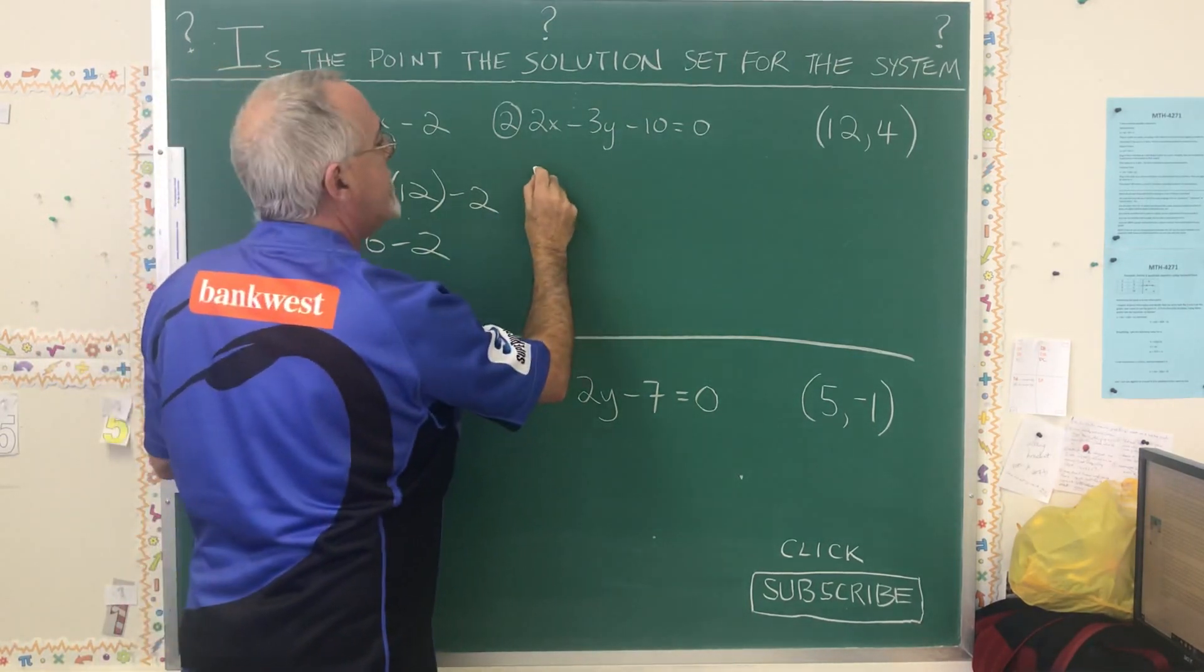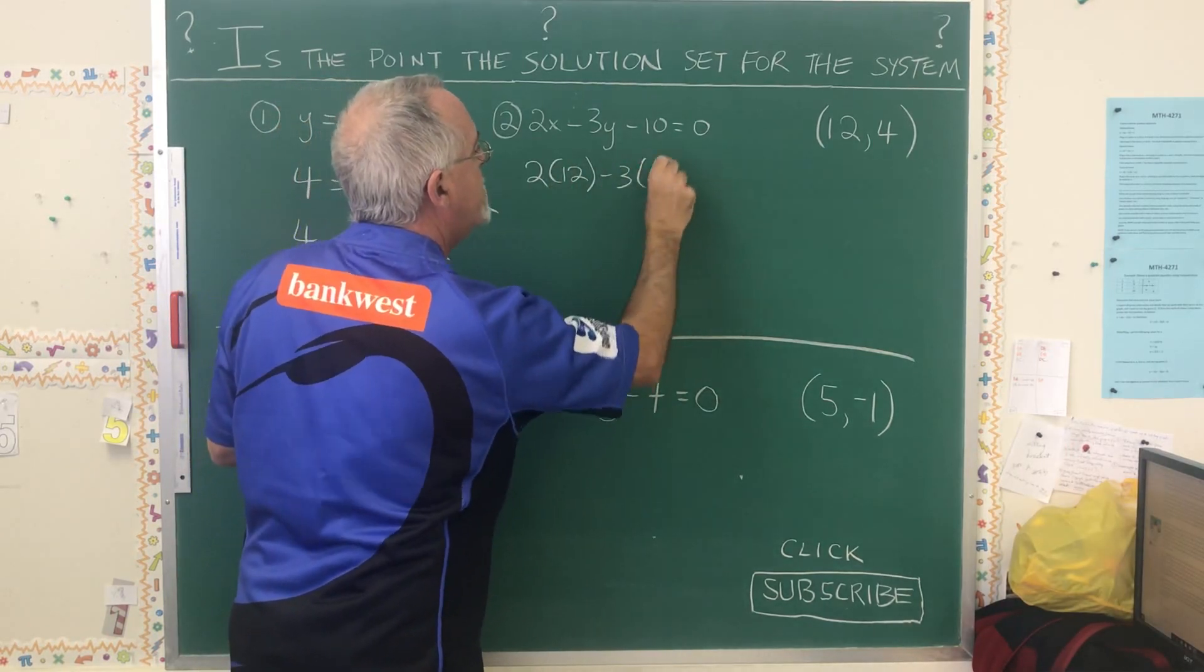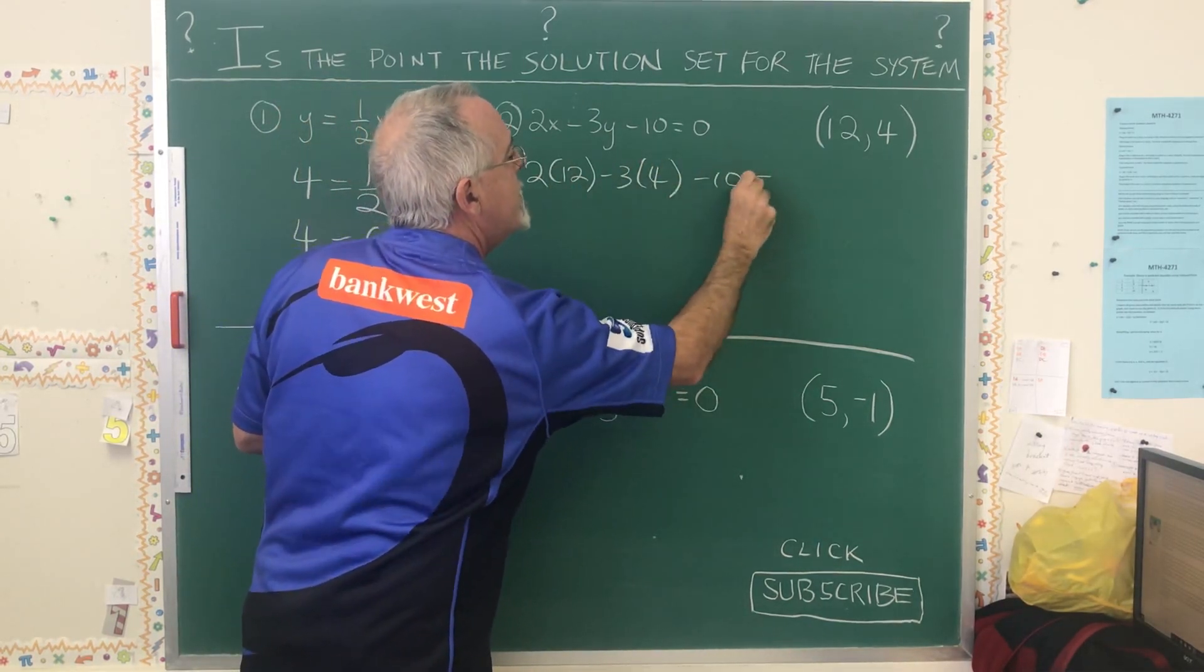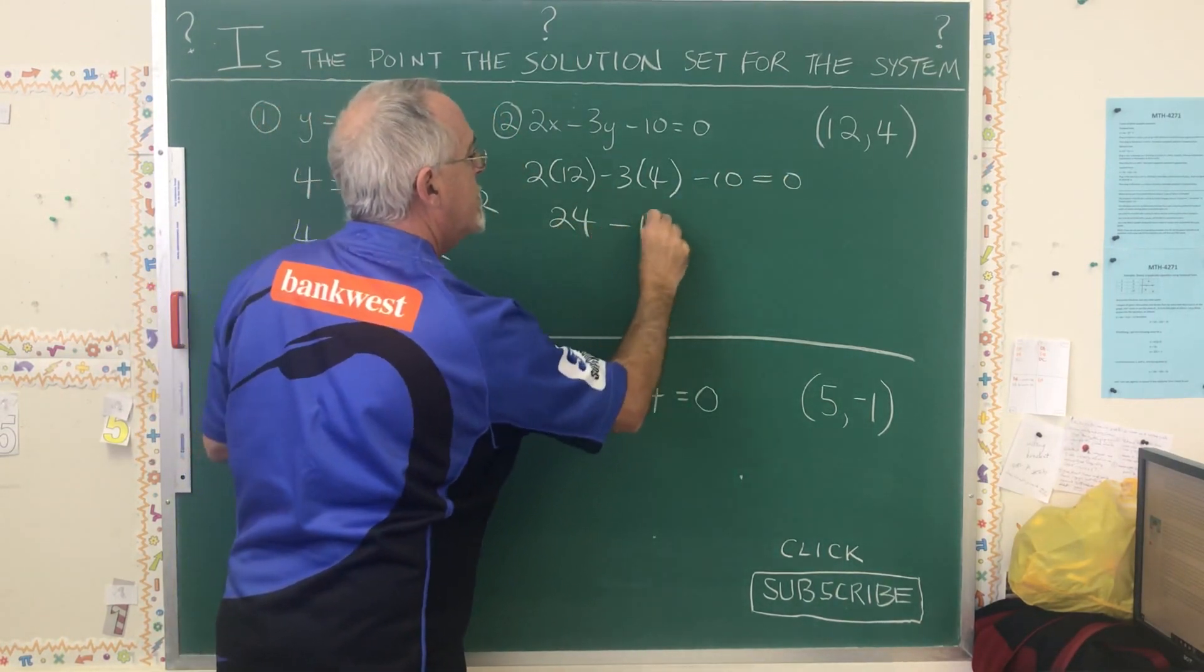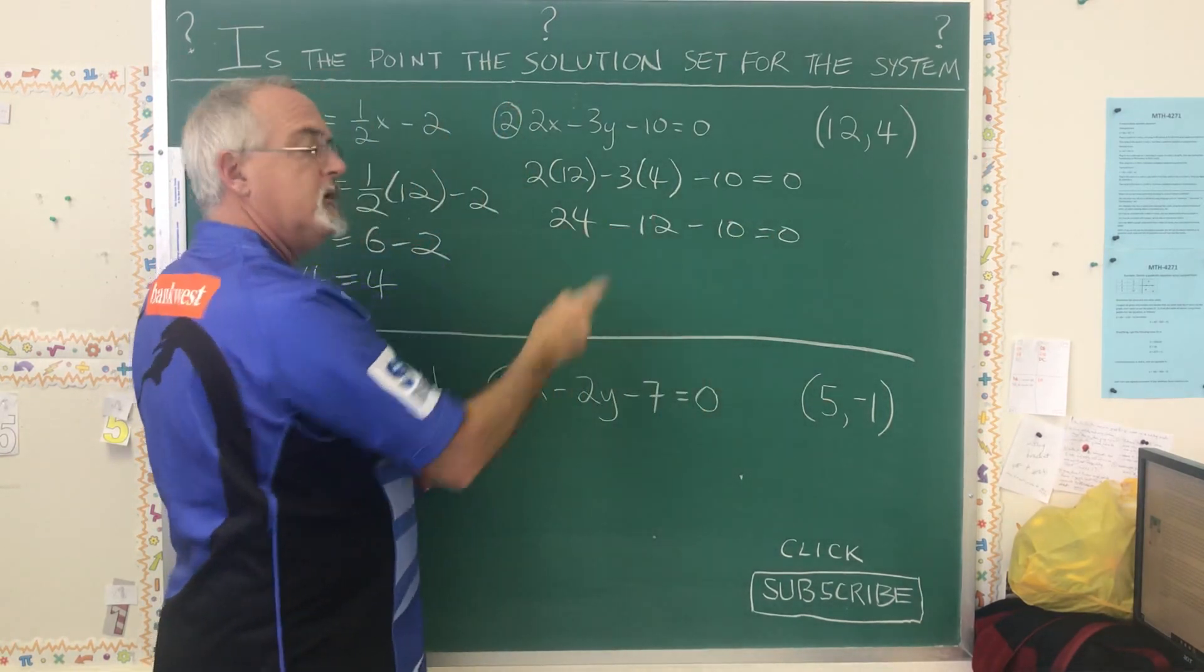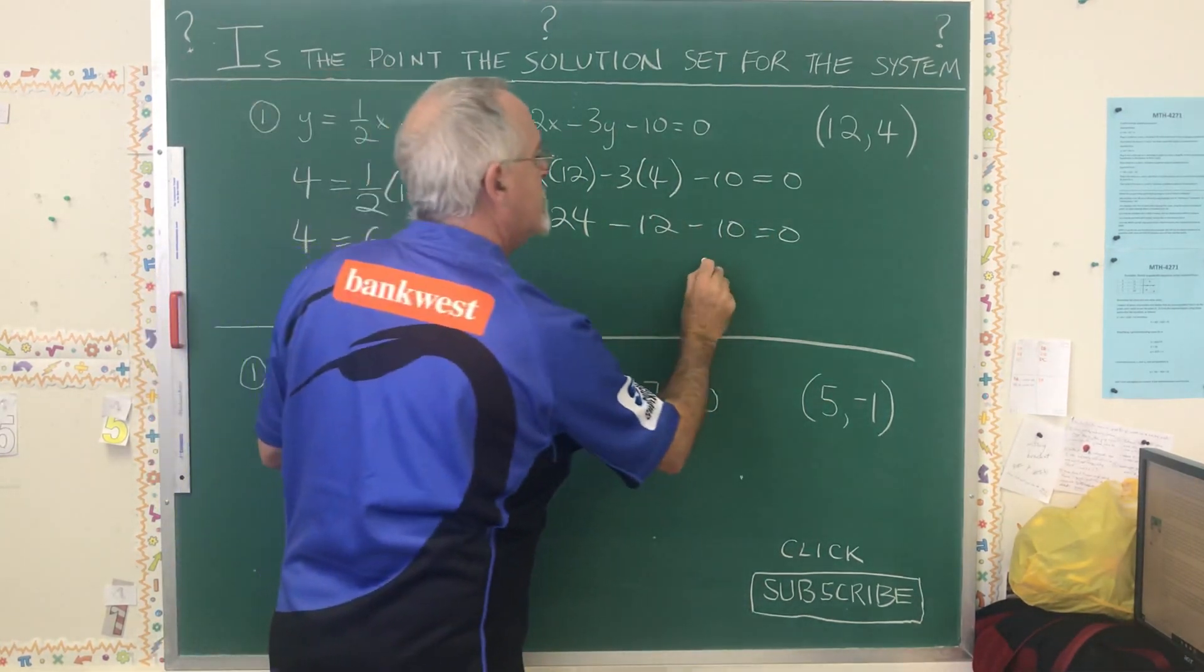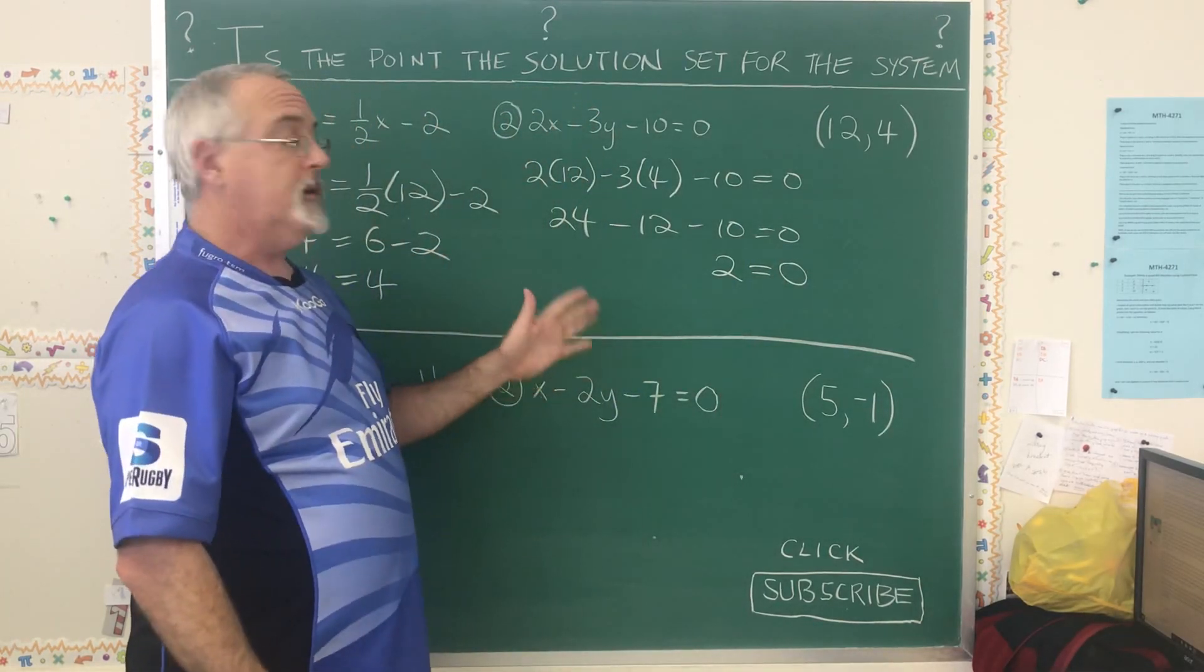So we plug it in. 2 times 12 minus 3 times 4 minus 10 must be equal to 0. We simplify. And we have 24 minus 12, which is 12, minus 10, which is 2. We have the statement 2 equals 0. This does not verify.